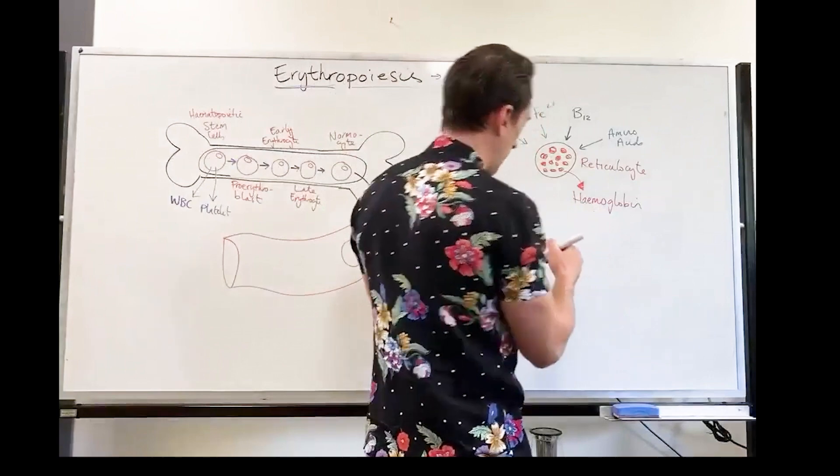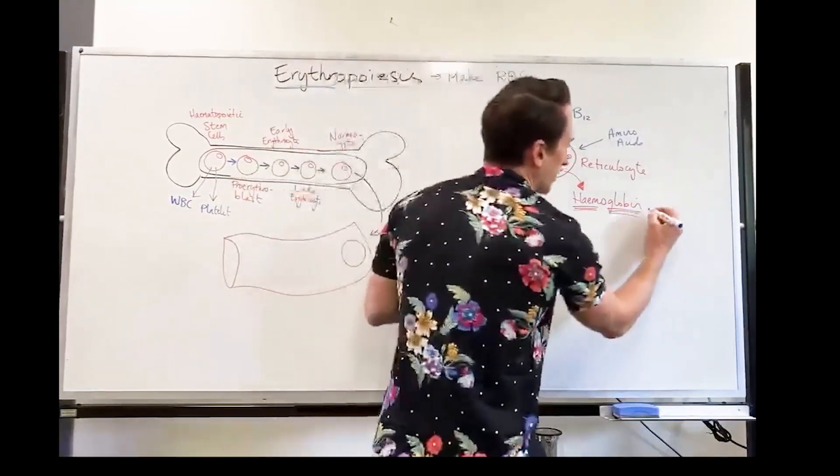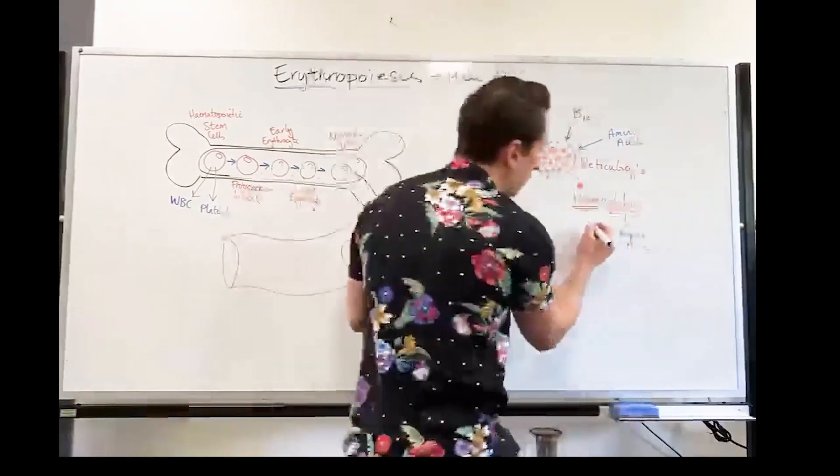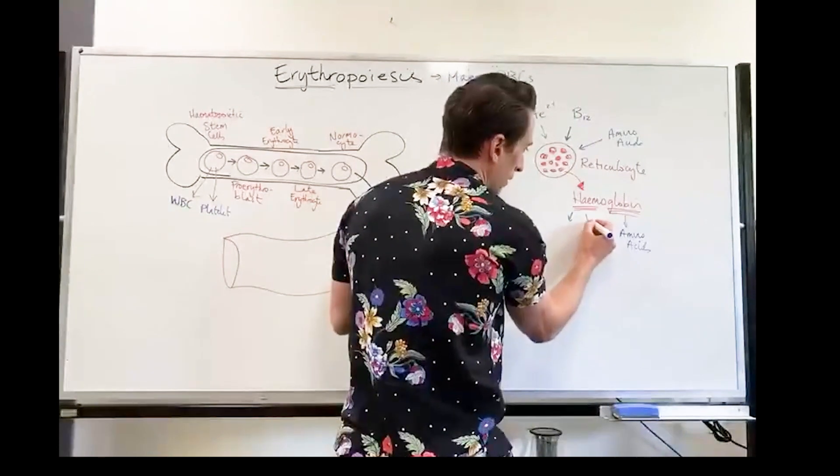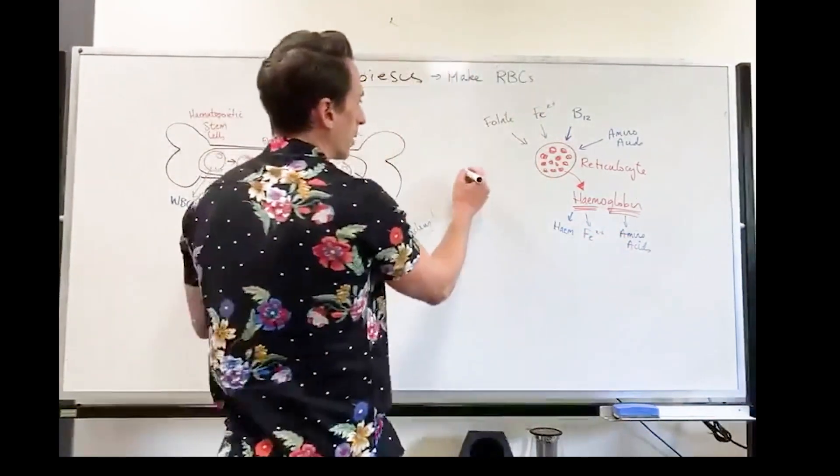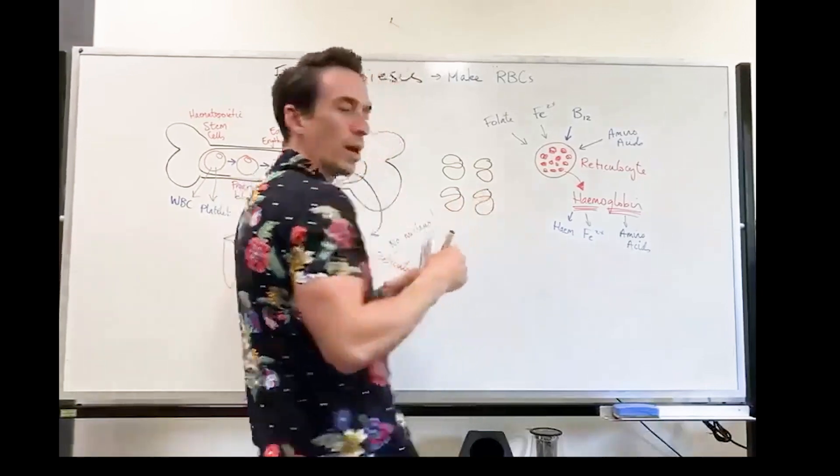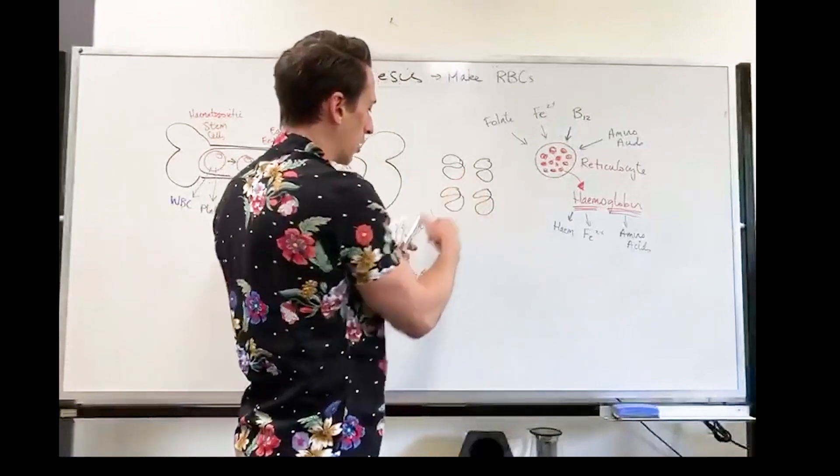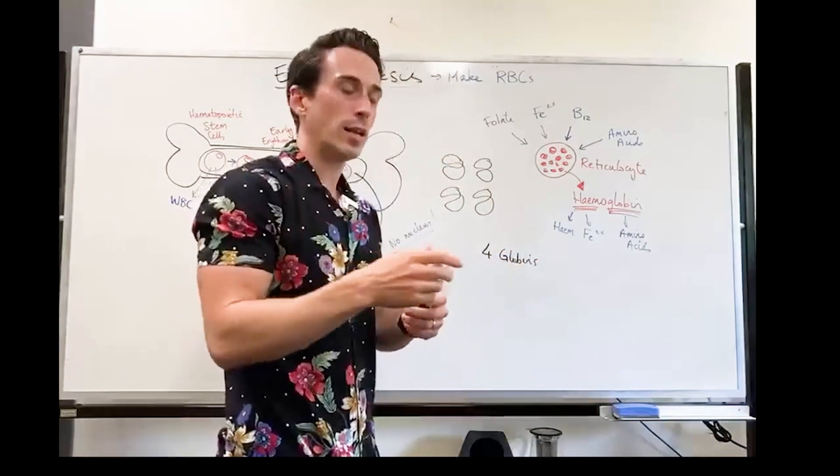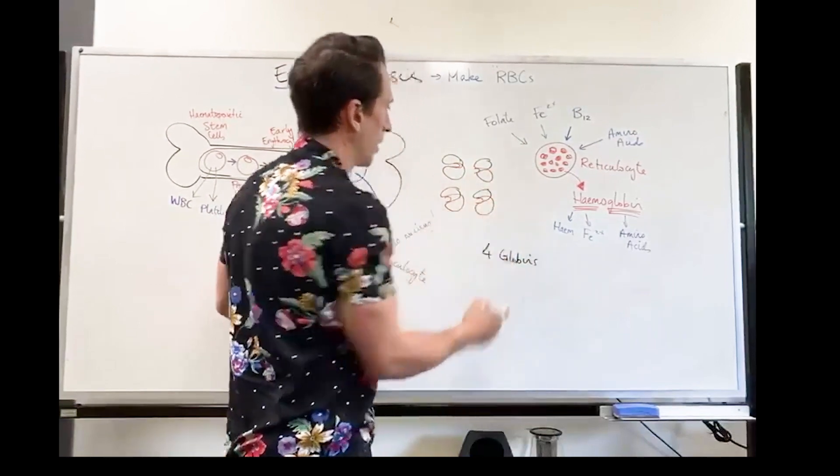So the hemoglobin is made up of two things: heme and globin. Let's draw it up. Globin is amino acids. Heme is made up of two components: heme itself and iron. And this is what it looks like. One hemoglobin has four globins and they're just amino acid chains. So four globins. Inside each globin, you have a heme molecule. So you have four heme molecules.